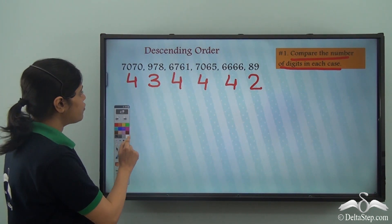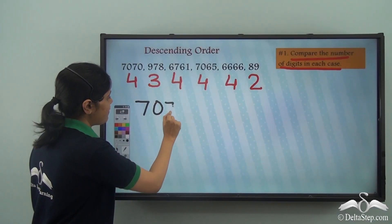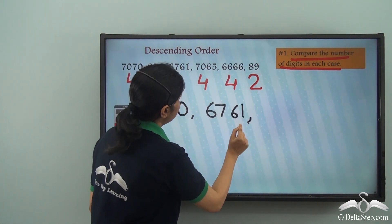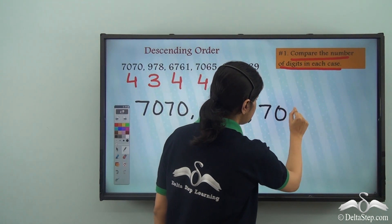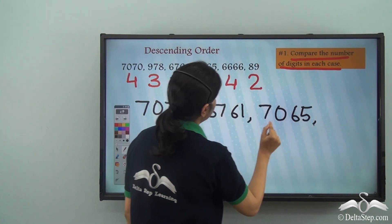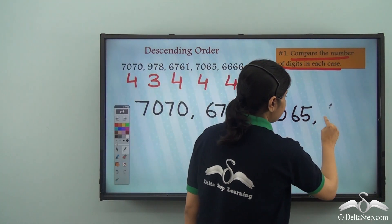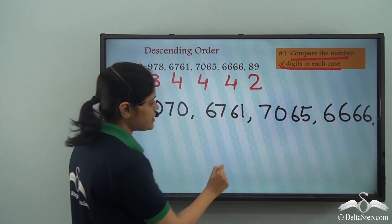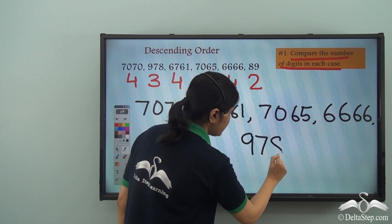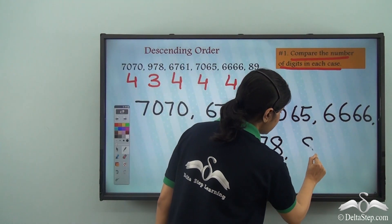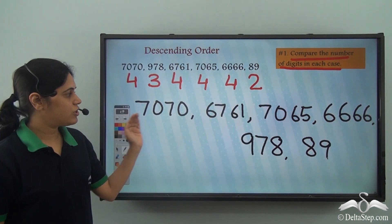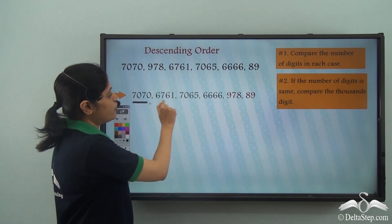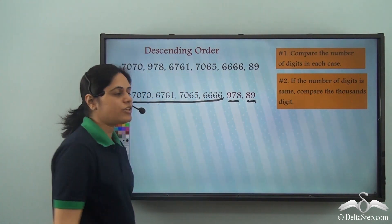So let us first write all the four-digit numbers: 7070, then 6761, then 7065, then 6666, then the three-digit number, and then the two-digit number. So this is what we get after rule one — all the four-digit numbers, then the three-digit number, and the two-digit number.